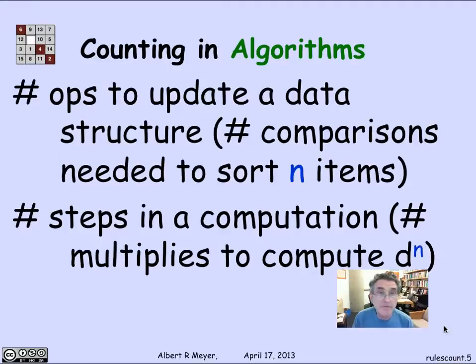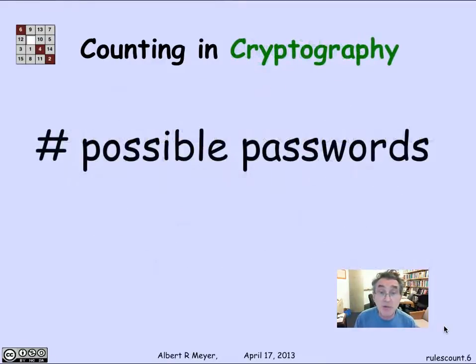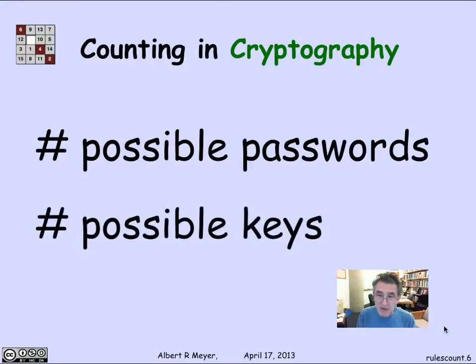One that we've seen when we looked at fast exponentiation is a question like, if you're trying to compute the nth power of a number d, how many multiplications does it take? It's roughly log n by using the iterated squaring method, and we want to be able to count that number of multiplications that a particular program uses to compute d to the n and the smallest number of multiplications you can get away with.